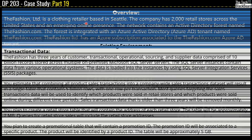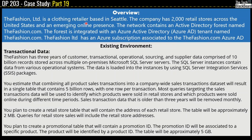Let's begin our case study and understand the overview section. Fashion Limited is a clothing retailer based in Seattle. The company has 2,000 retail stores across the United States and an emerging online presence. The network contains an Active Directory forest named thefashion.com, integrated with an Azure Active Directory tenant named thefashion.com. Fashion Limited has an Azure subscription associated to the thefashion.com Azure AD.